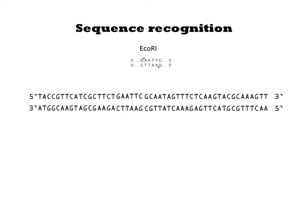EcoRI is one of the most popular restriction enzymes. Its recognition sequence is GAATTC. Like many other restriction enzymes, this recognition site is palindromic, meaning that the recognition site is identical to its reverse complement.